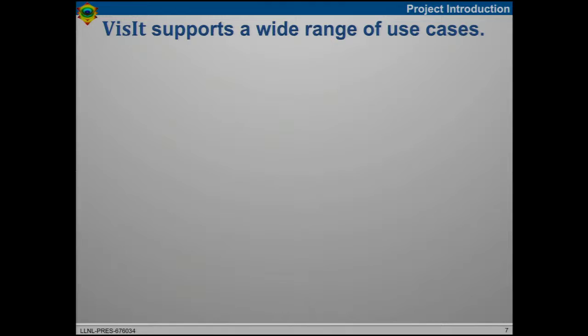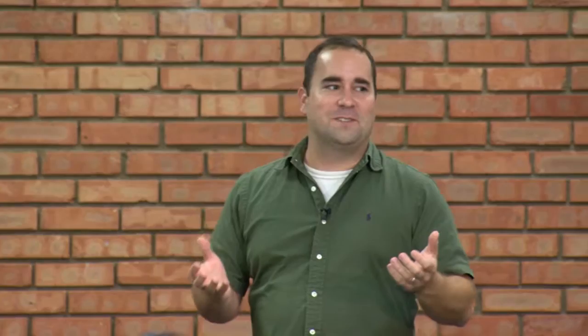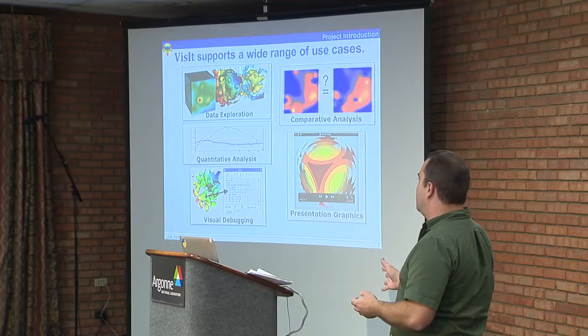VISIT supports the wide variety of things you need to do with a visualization tool. Data exploration is probably the most important — you get in, slice and dice, and ask questions. We also have ways of doing quantitative analysis, where curves are often the most important thing you extract from your simulation. Visual debugging is another powerful feature: if part of your mesh disappears in the middle of a simulation, you might not notice unless you actually look at your data. Sometimes the context you get from visualization helps you get right to the issue.